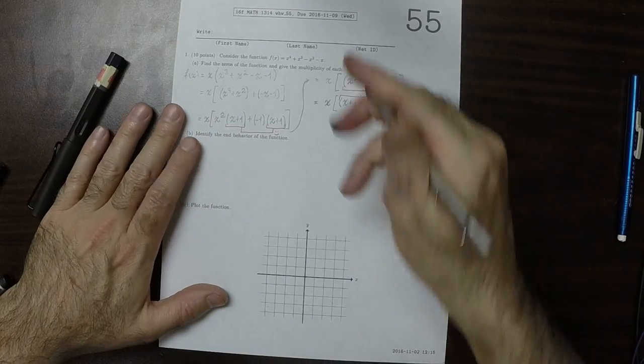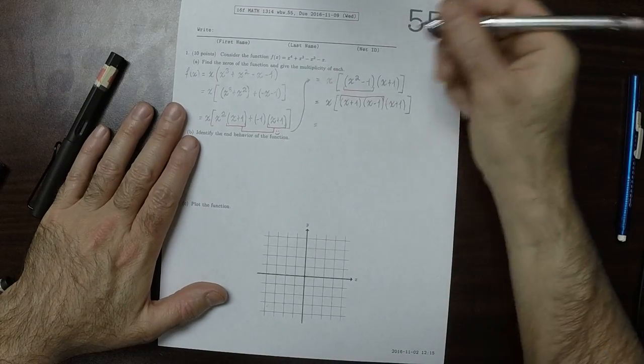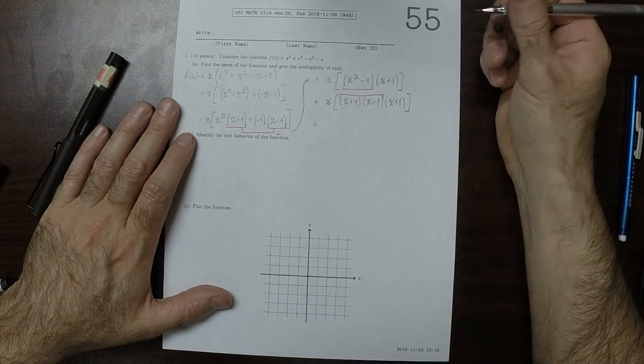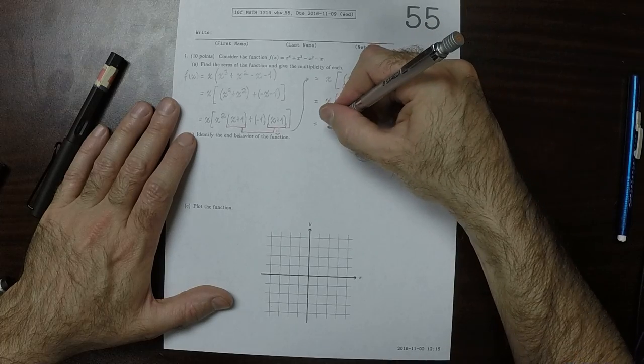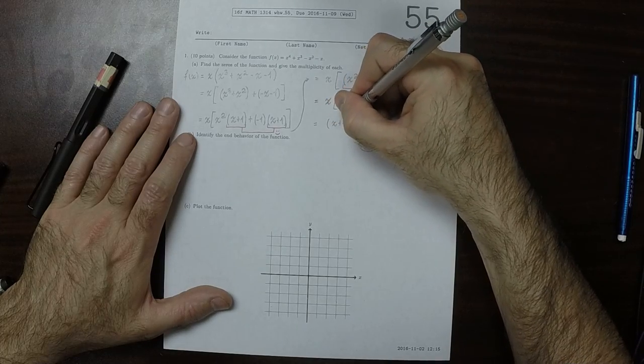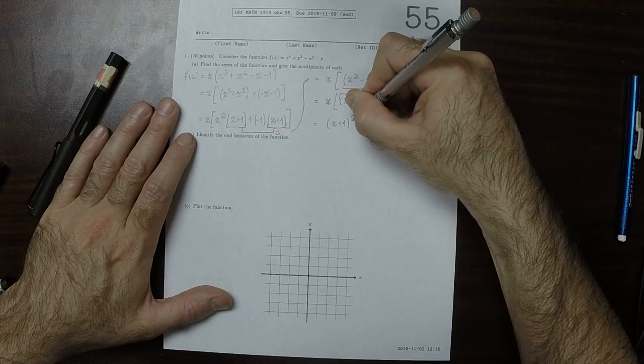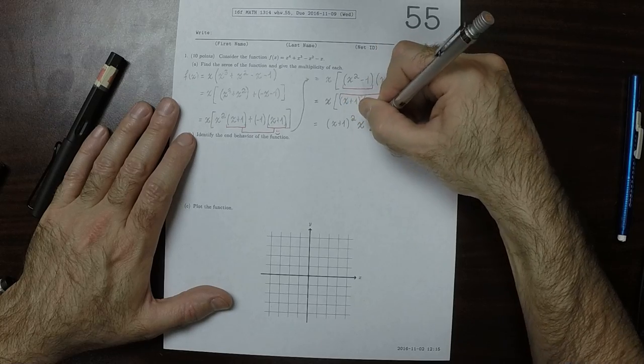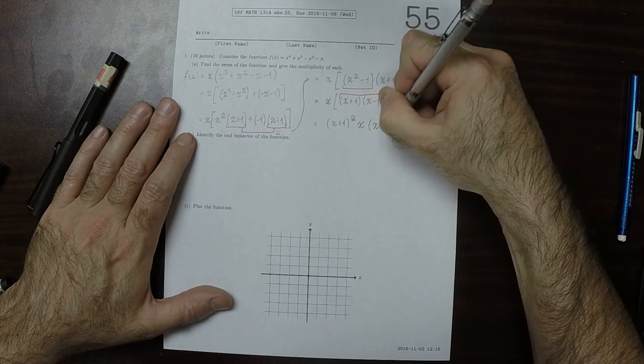And so now I'll commute and change the association to get the following: we get x plus 1 squared times x times x minus 1.